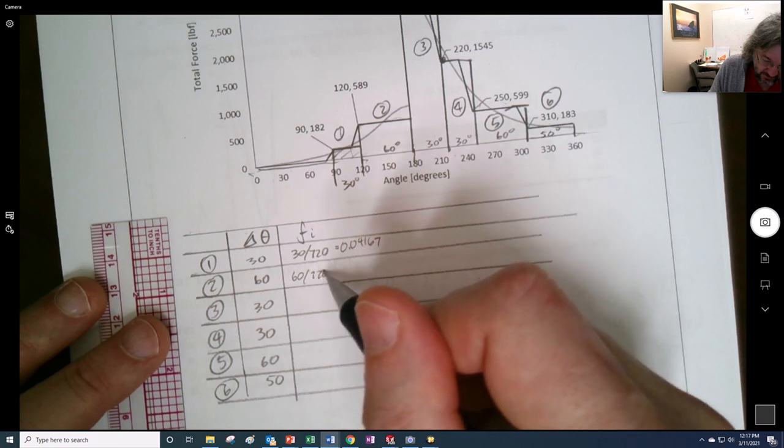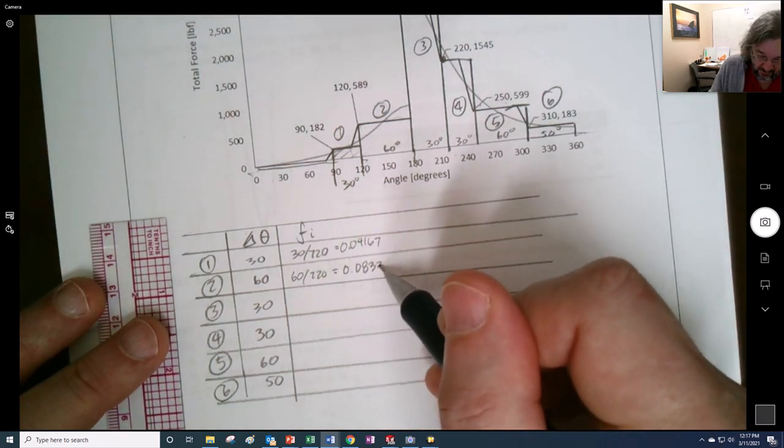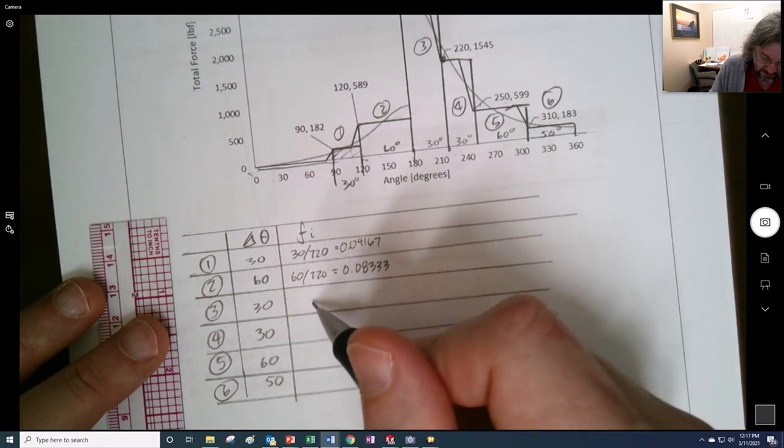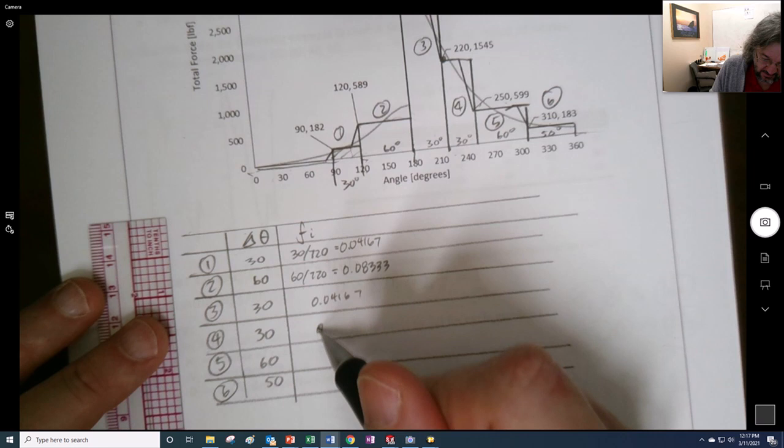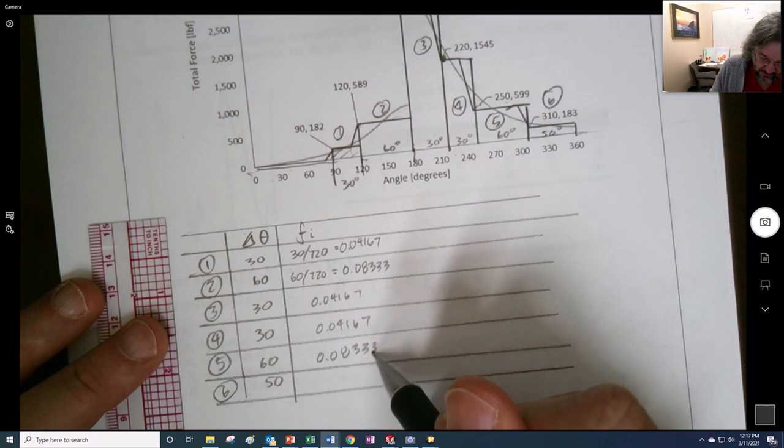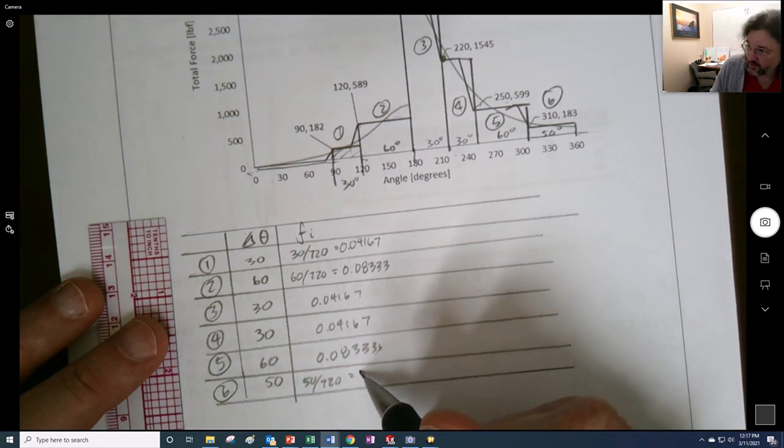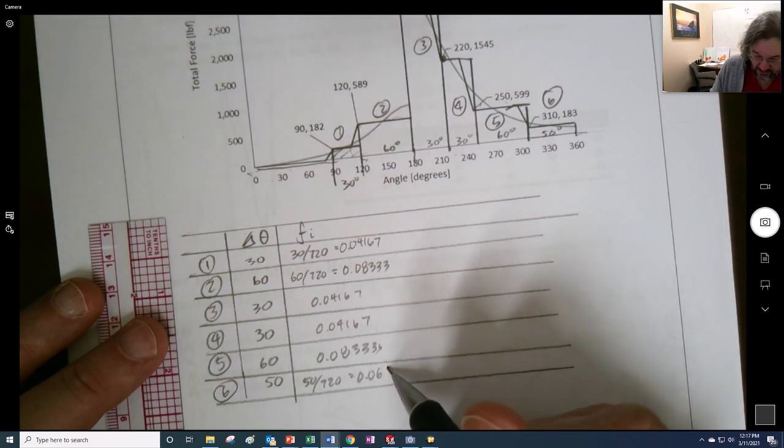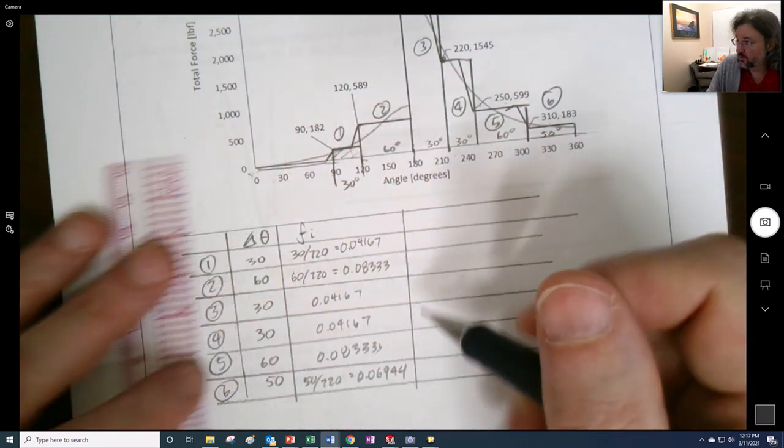Similarly here, 720, we'll get of course twice that, 0.08333. Here's the, so this point 0.04167, 0.08333, and then 50 over 720, so we get 0.06944.